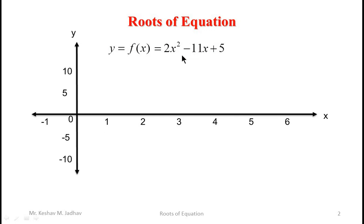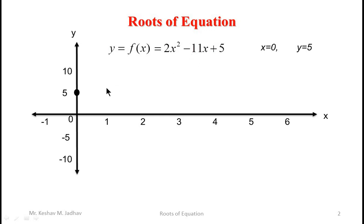Now to draw the graph of this given equation, let us put x is equal to 0. So if we put x equal to 0 in this equation then we will get y is equal to 5. So we can locate that point here at x equal to 0 and y equal to 5.